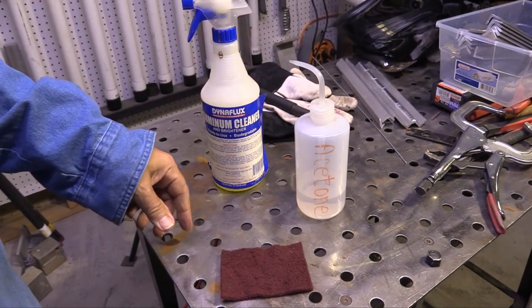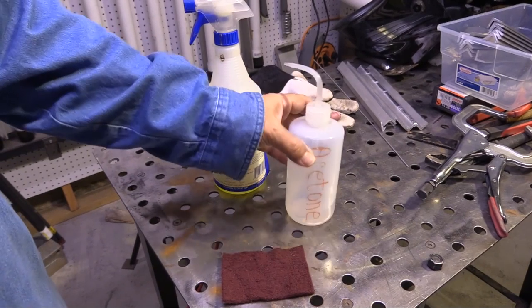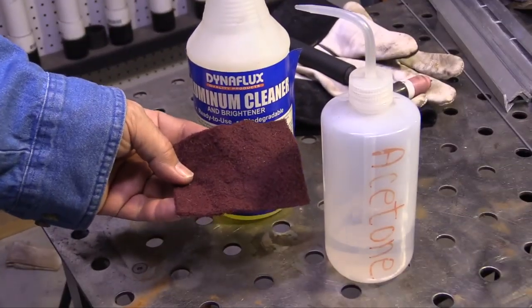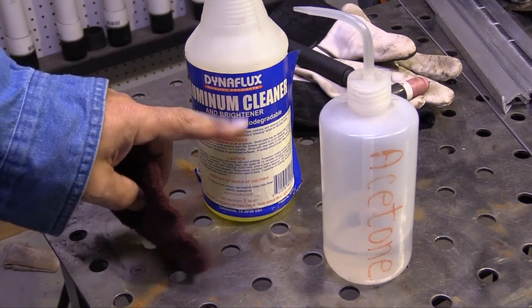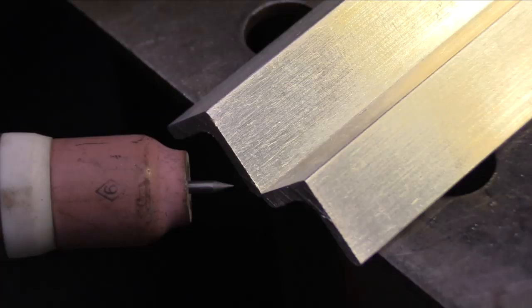I wiped it down with Scotch-Brite aluminum cleaner, rinsed it off, gave it a good wipe down with acetone. I went to a lot more trouble than I usually do and wound up with some pretty darn clean aluminum.